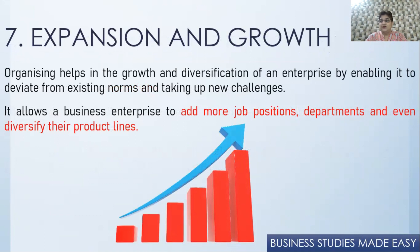Then expansion and growth. When the subordinate is also able to do the job of the superior, this leads to expansion and growth. For example, a school's vice principal often officiates as principal when the principal attends CBSE meetings or other work. If the school wants to open another branch, that vice principal can easily become the principal of the new school because she already knows the rules and regulations. So expansion and growth of the organization takes place when employees have learned the work and the organization structure is well defined — you can add more jobs, increase departments, and increase the line of products.